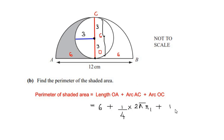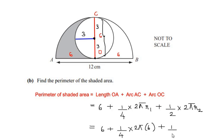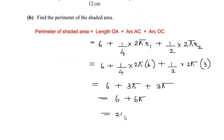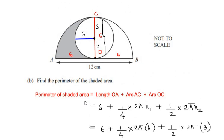Arc OC is also the circumference of a semicircle, with formula one over two times 2 pi r2. Substituting: 6 plus one over two times 2 pi times r1, which is 6 centimeters, plus one over two times 2 pi times r2, which is 3 centimeters. Simplifying: 6 plus 12 pi over 4 gives 3 pi, plus 6 pi over 2 gives 3 pi, so we have 6 plus 6 pi, which gives an answer of approximately 24.8 centimeters. This is the perimeter of the shaded area.